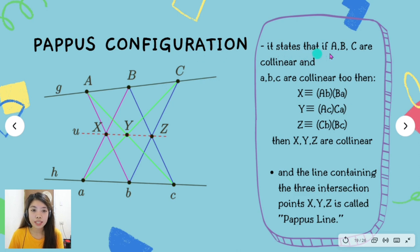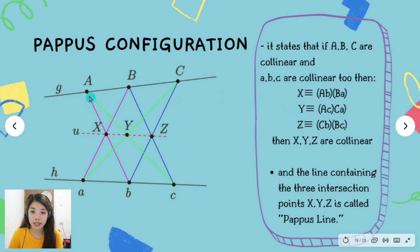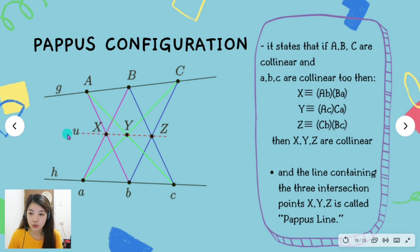The Pappus configuration states that if A, B, C are collinear and the lowercase letters a, b, c are also collinear, then X is the intersection of lines Ab and Ba, Y is the intersection of lines Ac and Ca, and Z is the intersection of lines Cb and Bc. Then X, Y, and Z are collinear, and the line containing the three intersection points X, Y, and Z is called the Pappus line. So this line U is called the Pappus line.